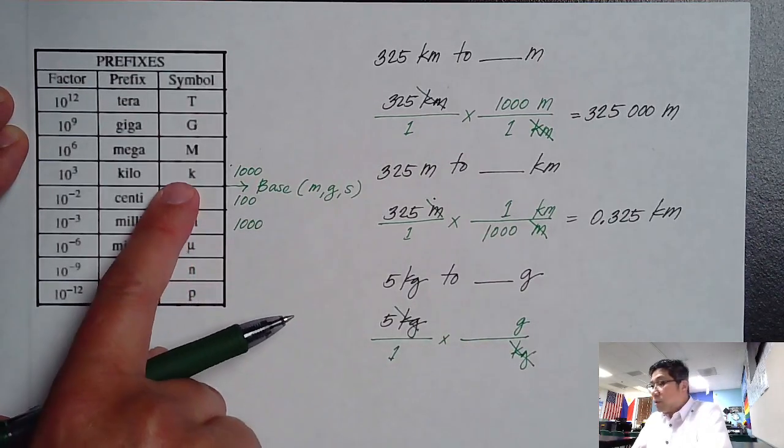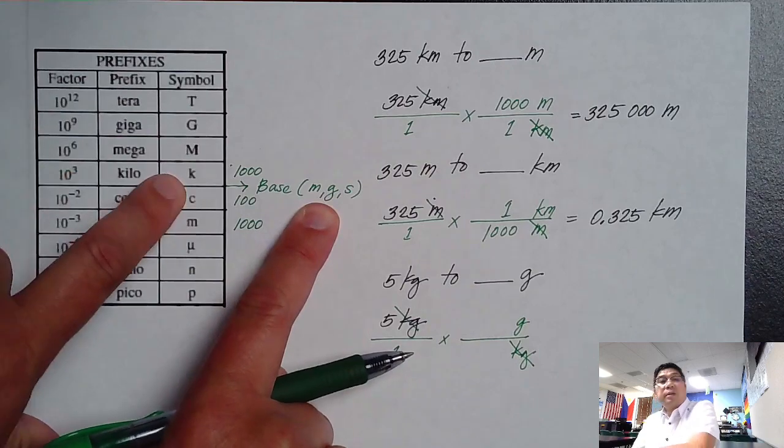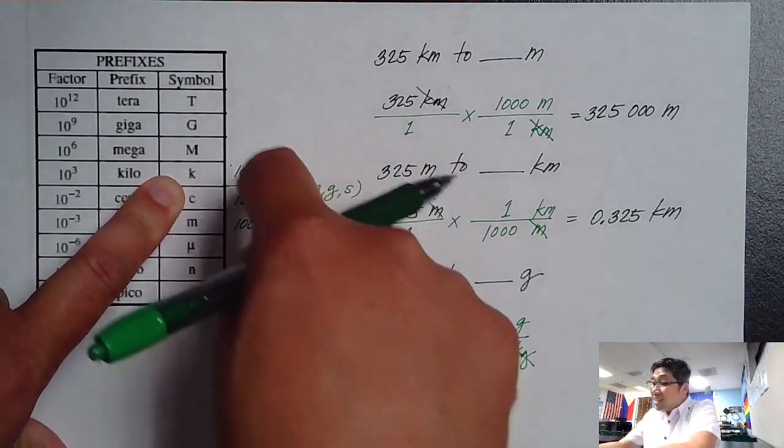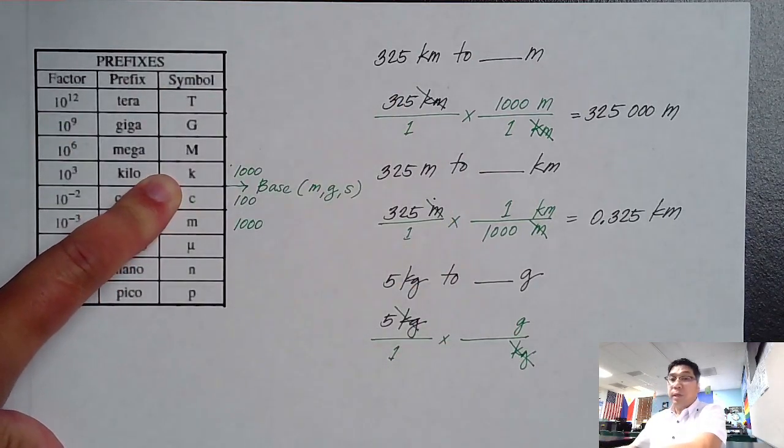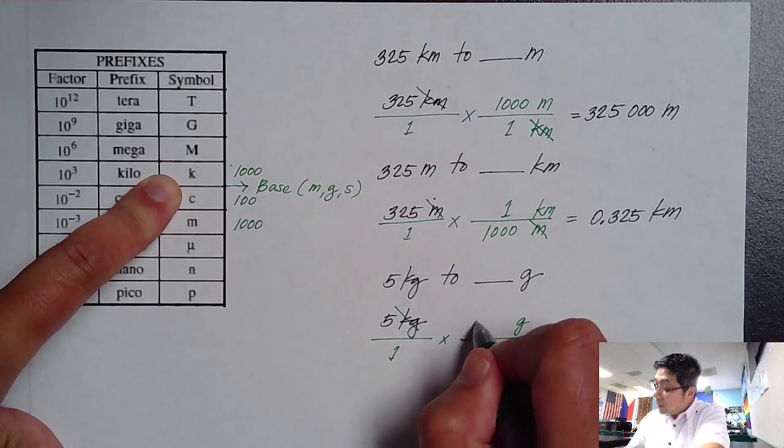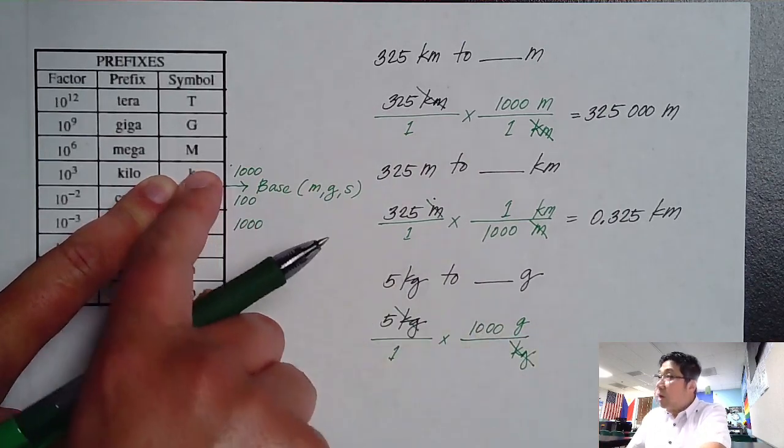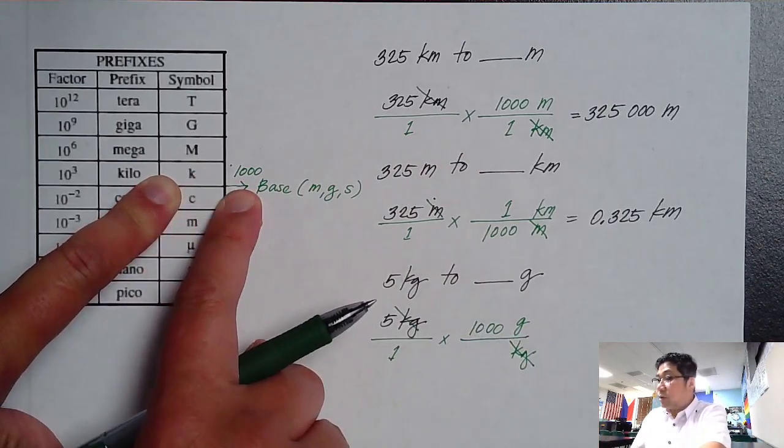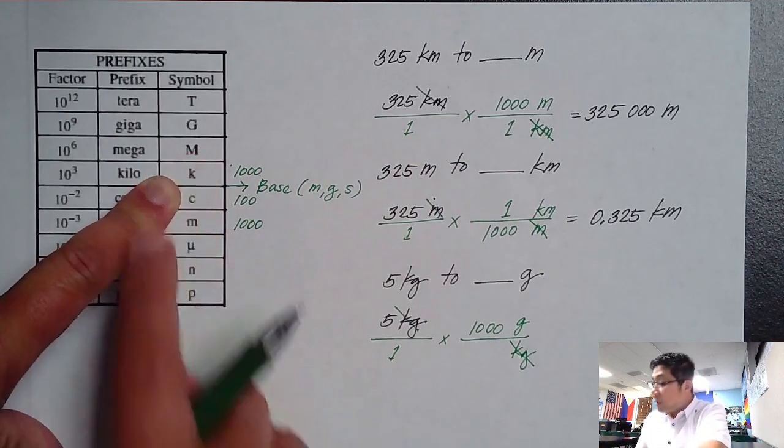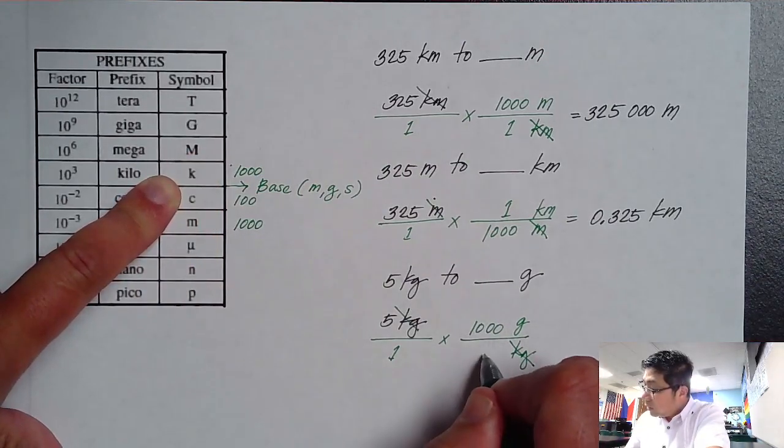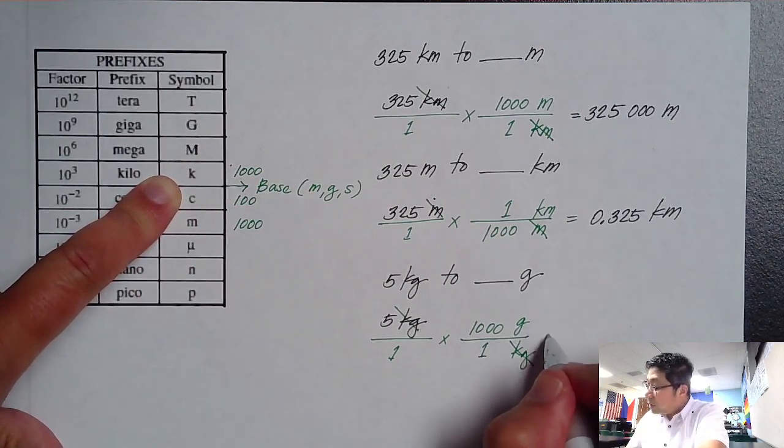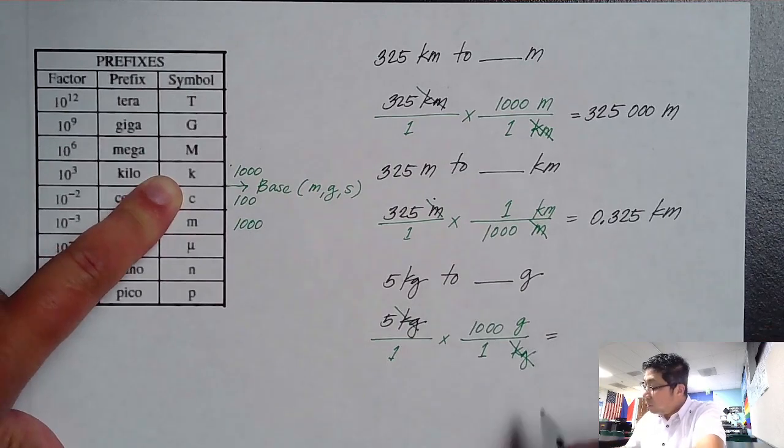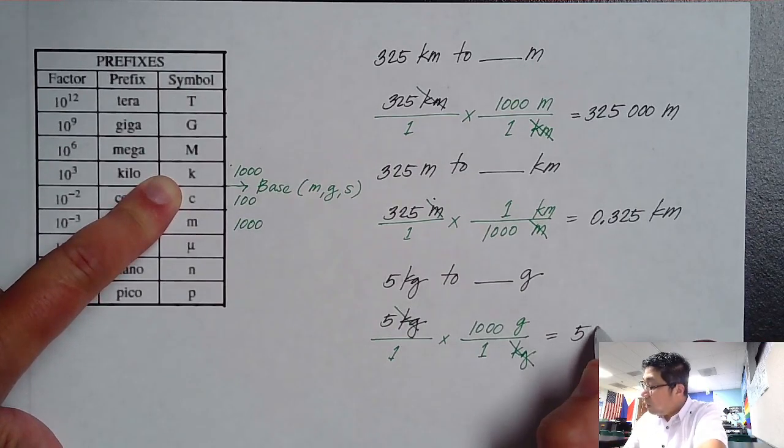So let's take a look at kilograms - K instead of M, let's use KG. So kilo, it is above the base going towards the base. So therefore, we have to multiply because it's coming from above the base. So kilo is above the base - that is 1,000 grams is equivalent to 1 kilogram. Now we can simplify it further, so 5 kilograms is simply equivalent to 5,000 grams.